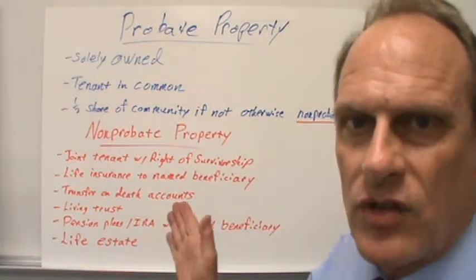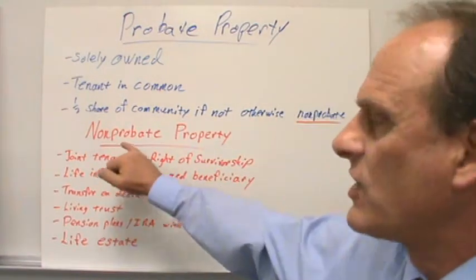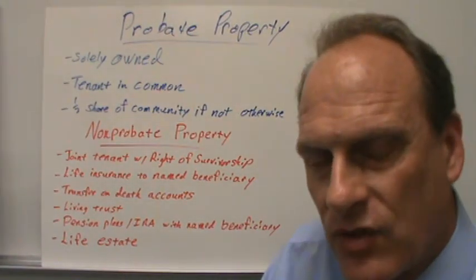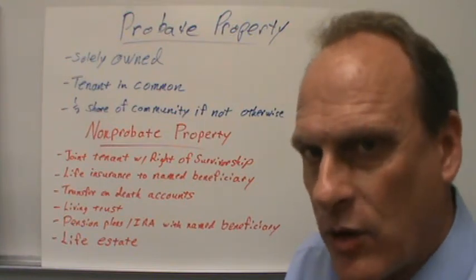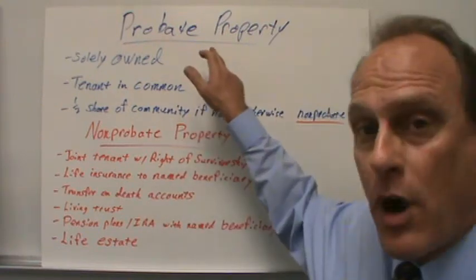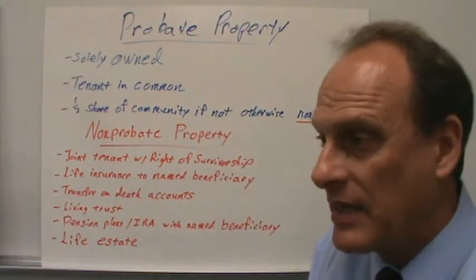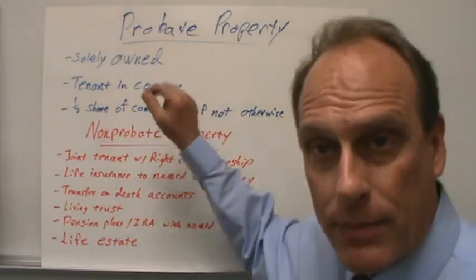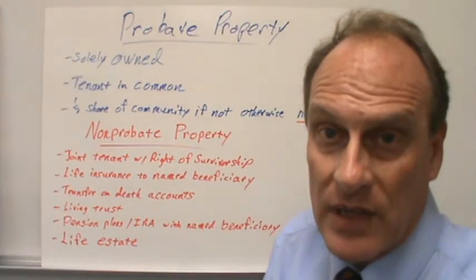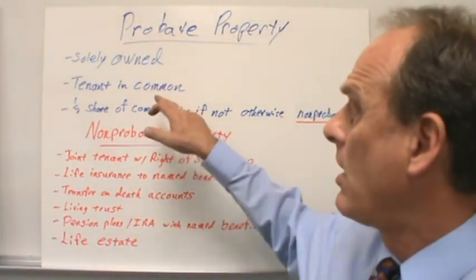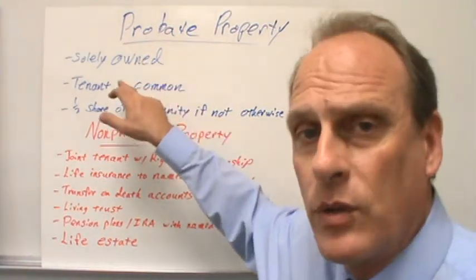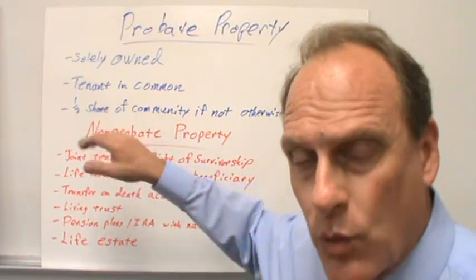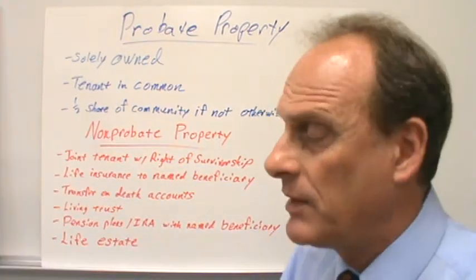We need a good understanding of the notion of probate property versus non-probate property. When we probate a will or distribute assets of an estate to the heirs, the probate court is only going to be interested in probate property — that is, property that will pass either according to the will or to the heirs. That would be all property solely owned by the testator or testatrix, and it would also include any property held as a tenant in common with someone else.